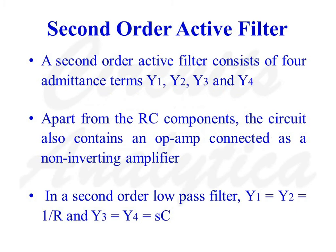A second-order active filter consists of four admittance terms Y1, Y2, Y3, and Y4. Apart from the RC components, the circuit also contains an op-amp connected as a non-inverting amplifier.